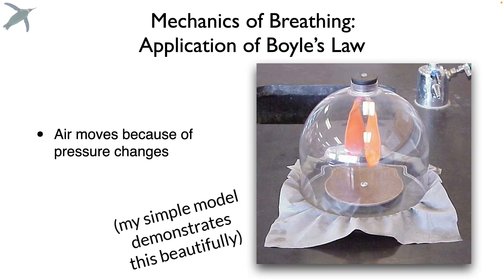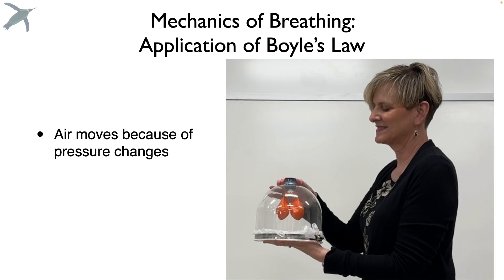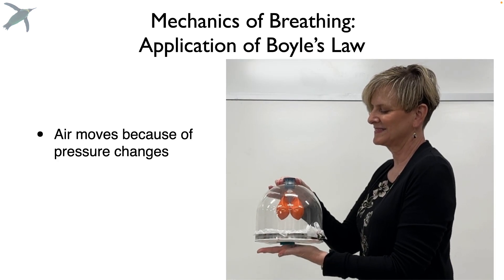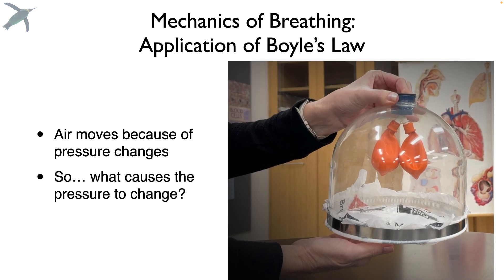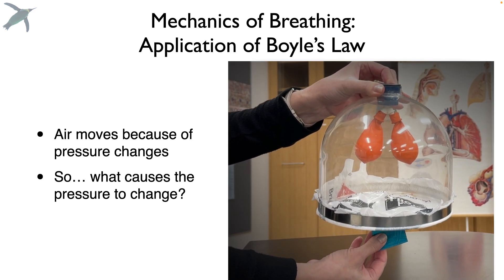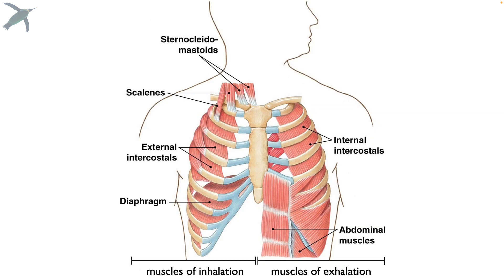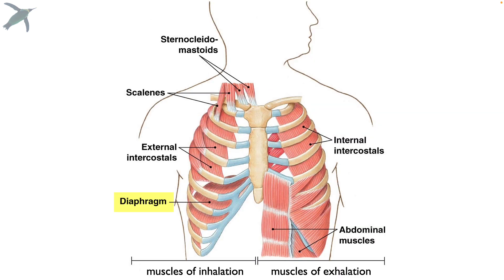Ventilation — the mechanics of breathing — is actually an application of this law. Air moves on its own when the pressure gradients change. The question becomes: what causes the pressure to change in the respiratory system? The answer is muscle — mainly the diaphragm, but also internal and external intercostal muscles, which are muscles between the ribs, as well as the scalenes and the sternocleidomastoid.